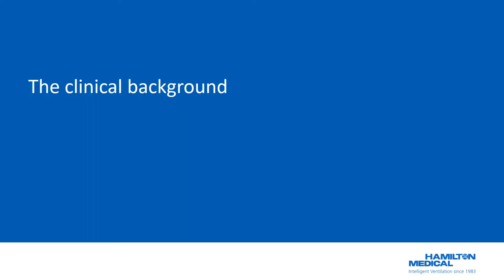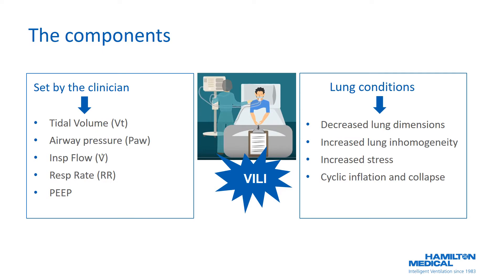The rationale behind mechanical power is that different components may contribute to the total mechanical power applied on a respiratory system, and these can increase the risk of ventilator-induced lung injury. Some are related to what the clinician sets on the ventilator — such as tidal volume, airway pressure, flow, rate, or PEEP — and some depend on the lung conditions of the patient, which impact peak pressure, plateau pressure, and driving pressure.